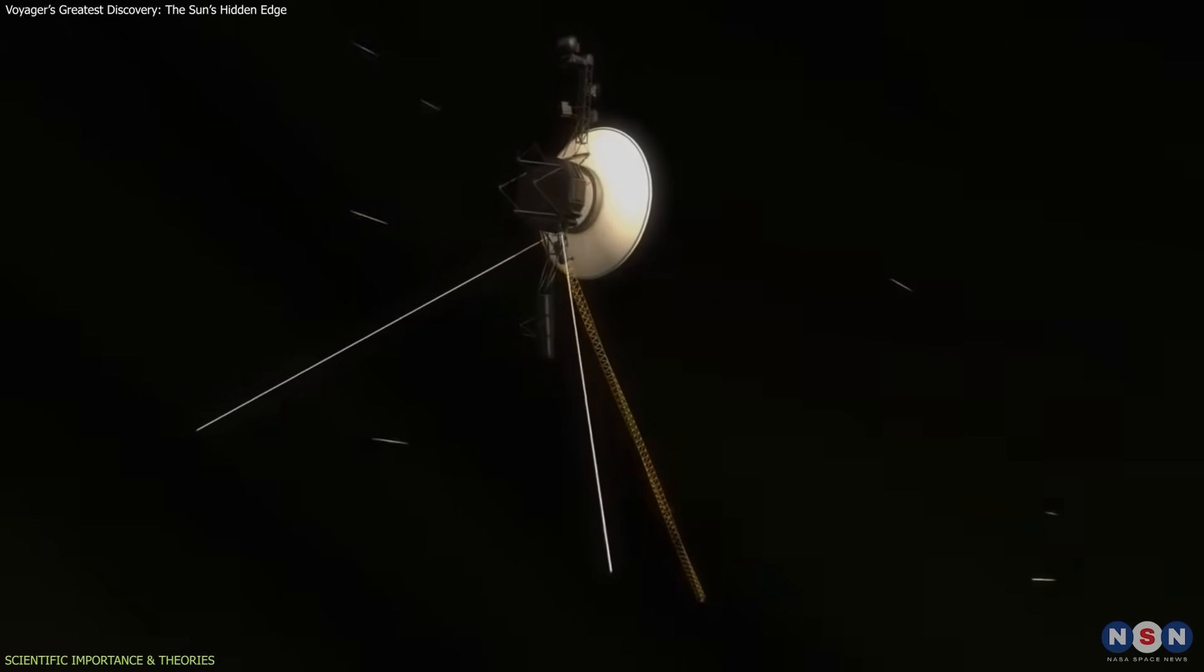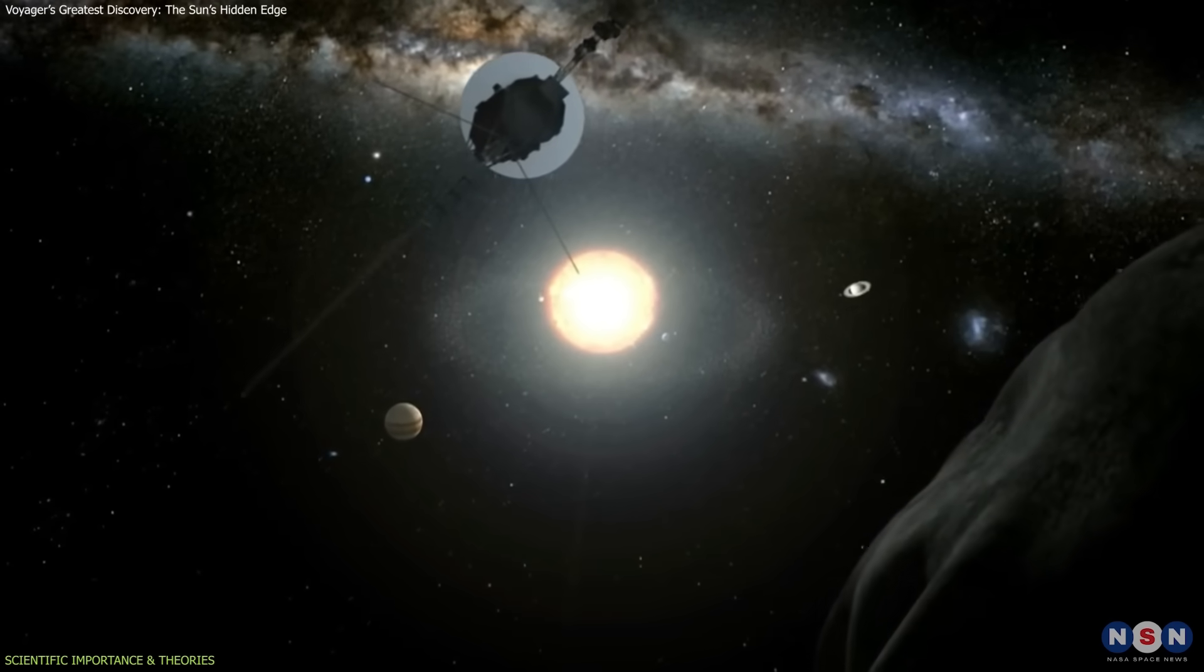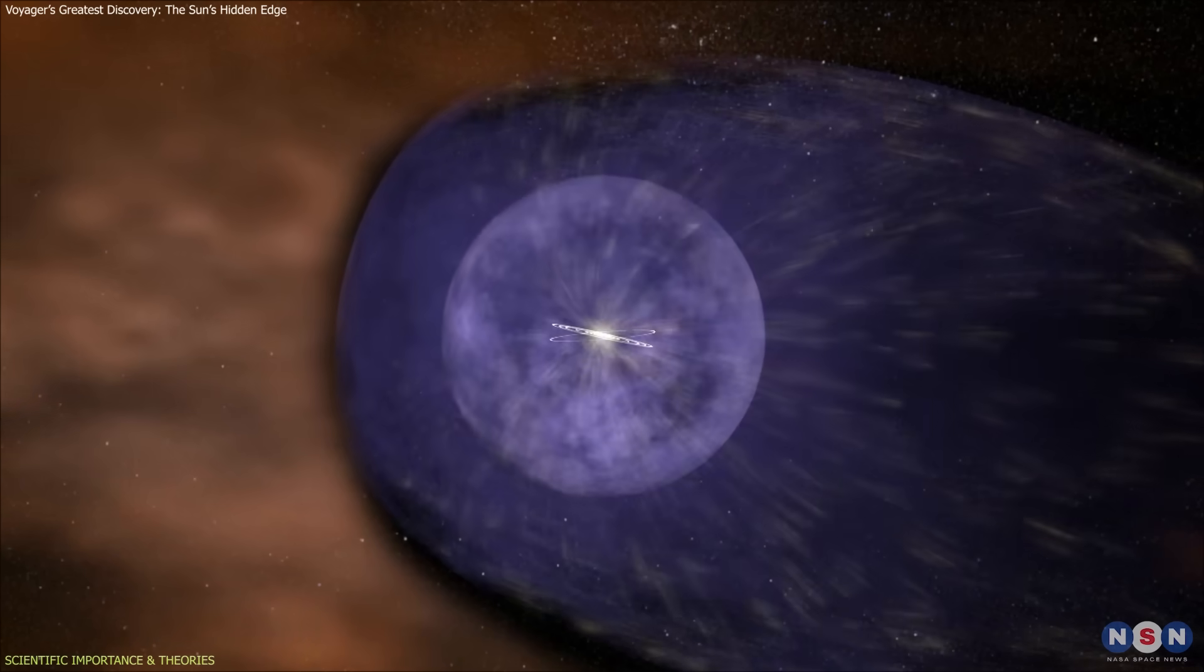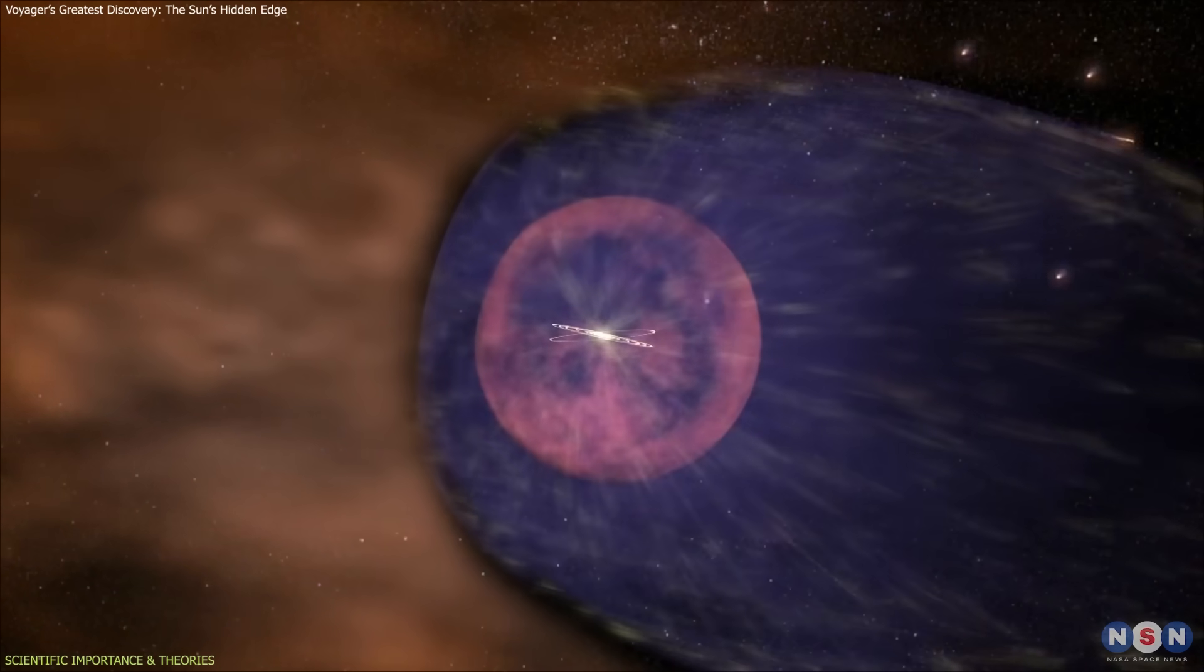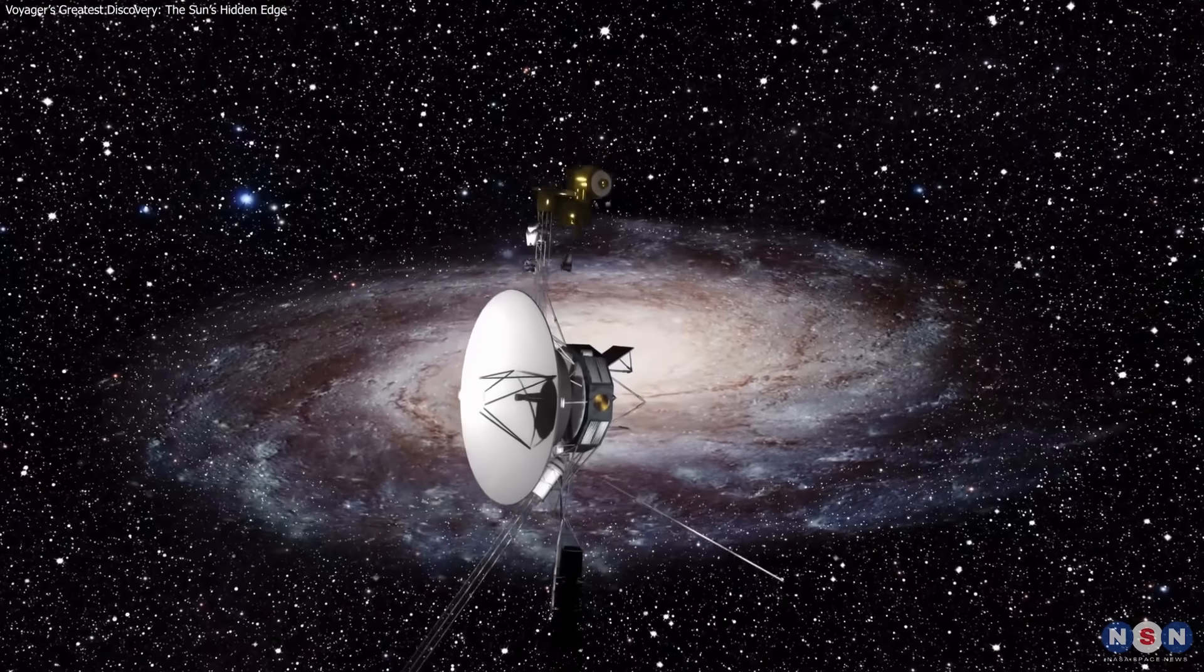In short, Voyager's discoveries showed that our solar system's edge isn't fixed or calm. It's a living, shifting boundary shaped by the Sun's heartbeat and the galaxy's invisible currents.